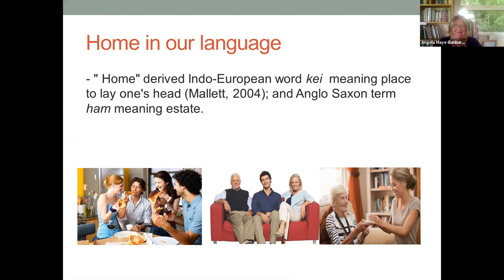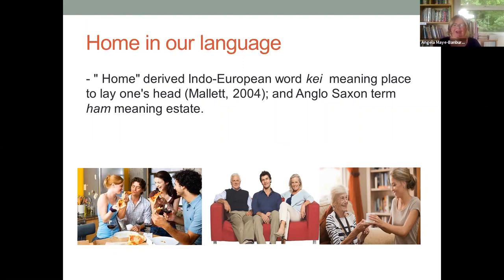I'm a big believer in looking back at the origins of words, because a word is a metaphor — a vehicle to help our understanding of the world. Language itself is amazing, constantly evolving, and it's good to go back to the genesis of key terms. The word 'home' is derived from the Indo-European word 'k,' meaning a place to lay one's head, and the Anglo-Saxon term 'ham,' meaning estate — an amalgamation morphed into the meaning of home.